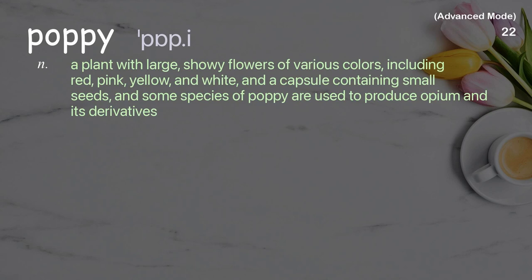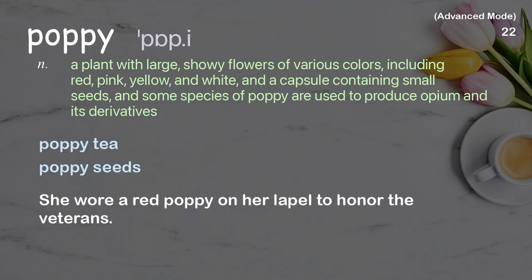Poppy: A plant with large, showy flowers of various colors, including red, pink, yellow, and white, and a capsule containing small seeds. Some species of poppy are used to produce opium and its derivatives. Examples: Poppy tea. Poppy seeds. She wore a red poppy on her lapel to honor the veterans.